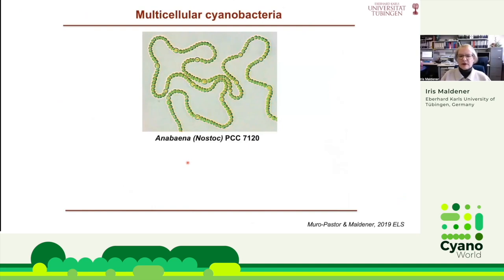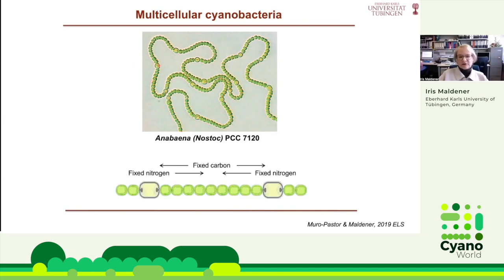Here you can see a picture of a filament of Anabaena, also known as Nostoc PCC 7120, the model organism and the pet in our lab. You can see that several cells differentiate to heterocysts when these filaments are grown on medium without nitrate, ammonia, or any nitrogen source. The heterocysts, which are the sites of nitrogen fixation, have to be supported by the photosynthetically active vegetative cells, which deliver photosynthates like sugars to the heterocysts. The heterocysts then deliver fixed nitrogen compounds like amino acids to the vegetative cells. All these metabolites, but also some signaling molecules which take care of the semi-regular pattern of the heterocysts, have to be transported from cell to cell along the filaments.